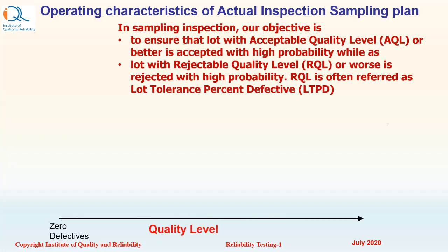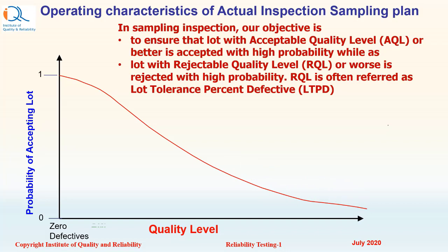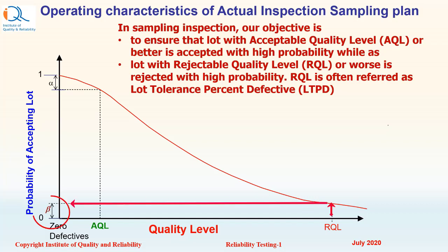On the x-axis we have quality level, with perfect quality of zero defectives on the left side. On the y-axis, we have probability of acceptance from zero to one. The curve falls monotonically — the probability of acceptance goes down from one to a very low level as the quality level deteriorates. At AQL, the probability of acceptance should be high, and the difference between this probability and unity is the alpha risk. At RQL, the probability of acceptance should be low, which is the beta risk.